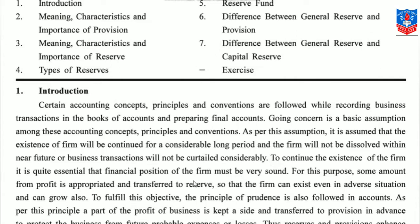To continue the existence of the firm, it is quite essential that the financial position of the firm must be very sound. To have the continuation of the firm, the financial position of the business should be very strong. For this purpose, some amount of profit is appropriated and transferred to reserve so that the firm can exist even in adverse situations and can grow also. In the year when the firm earns profit, some amount out of that profit has to be kept aside for adverse situations.